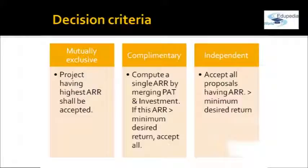For mutually exclusive proposals, the one with the highest ARR (above the minimum required rate) is accepted. For complementary proposals, sum the investment and profitability across all projects, compute the combined ARR, and if it exceeds the required rate of return, accept all; otherwise reject all. For independent proposals, evaluate each individually — accept those with ARR above the minimum desired return, and reject the rest.